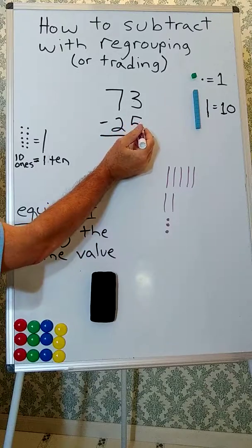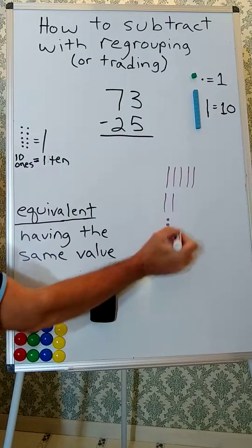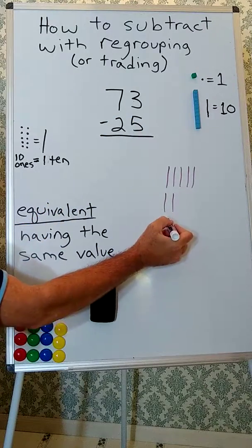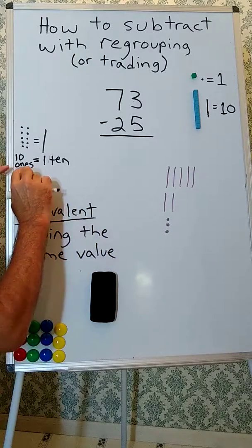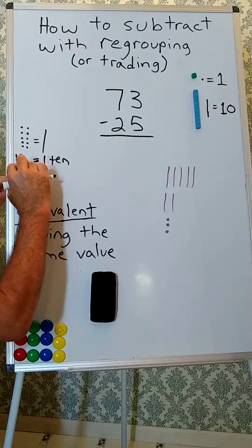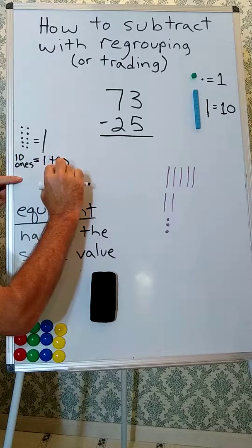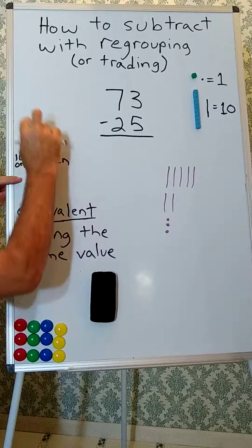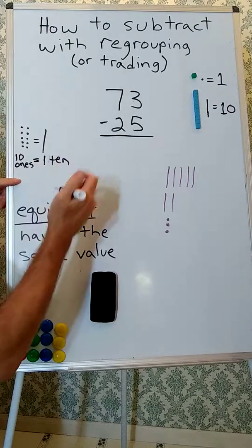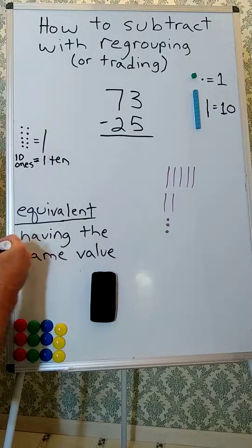Two tens and five ones. And if we look, we see we only have 3 ones. So we need to use the idea that 10 ones is equivalent to 1 ten, so we can trade a ten for 10 ones, and we'll still have the same problem. So let's see what that looks like.